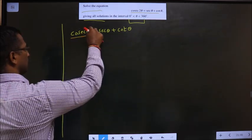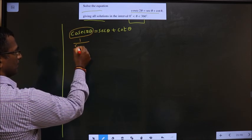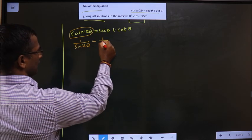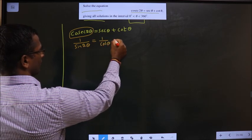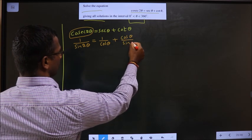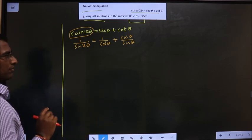Cosecant 2θ is the reciprocal of sine, so 1 by sine 2θ. Secant is 1 by cos θ. Cot is cos θ by sine θ. Clear? We have changed it. Next, how do you simplify?